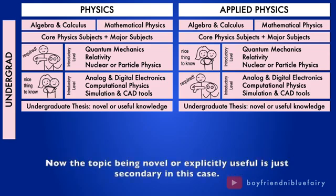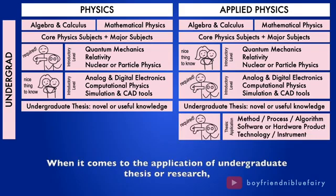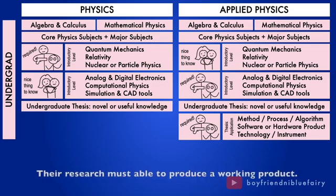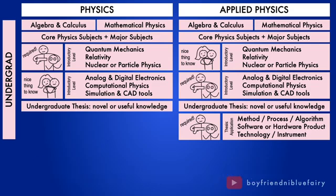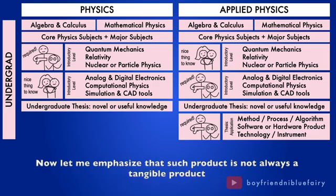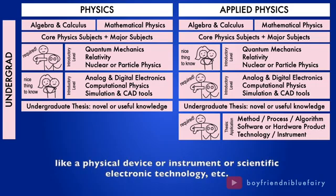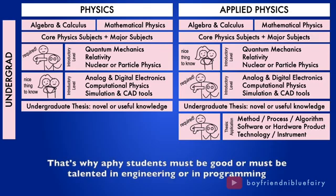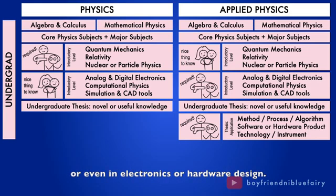Now, the topic of being novel or explicitly useful is just secondary in this case. When it comes to the application of undergraduate thesis or research, this is where the pressure comes in to applied physics students. Their research must be able to produce a working product. Now, let me emphasize that such product is not always a tangible product like a physical device or instrument or scientific electronic technology, etc. This product can also be in the form of software, or a process, or an algorithm, or even a method. That's why applied physics students must be good or must be talented in engineering or in programming or even in electronics or hardware design.